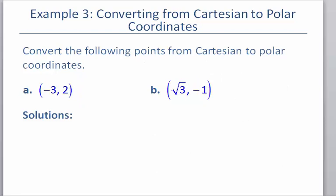The last thing we're going to look at is converting from Cartesian — from rectangular, from an X and a Y — to polar. Remember the formulas: R squared equals X squared plus Y squared, and tangent theta equals Y over X.